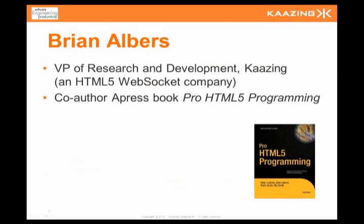I'm Brian Albers, I'm the VP of R&D at Kazi. Kazi is an HTML5 Web Socket company which produces the Kazi gateway, and we've been working in HTML5 for about the last three years. When we started the company, we were working on building what we would call a better comet server. And then when Web Sockets arrived on the scene, we created a product — the gateway — around that Web Socket specification, and we kept it up to date and improved on it as the specification itself evolved.